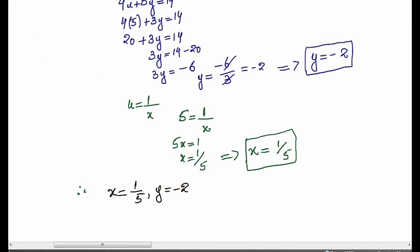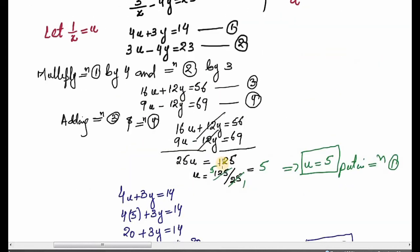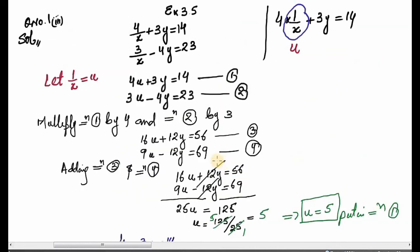This is the solution of this pair of linear equations. The answer is x = 1/5 and y = -2. This was Question Number 1, Part 3, solved using the elimination method after substitution.